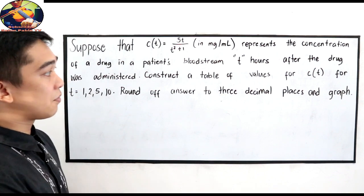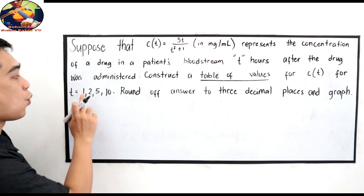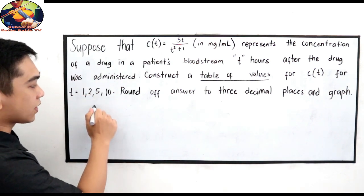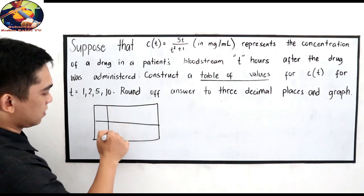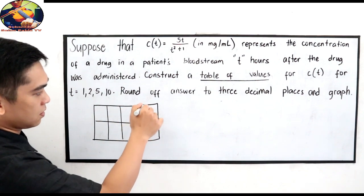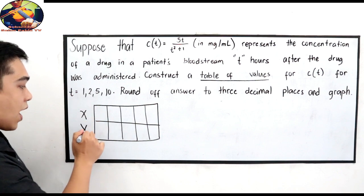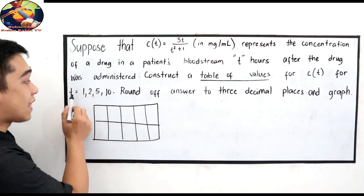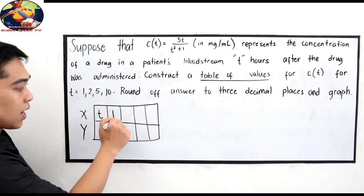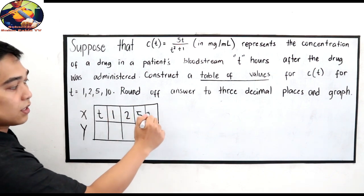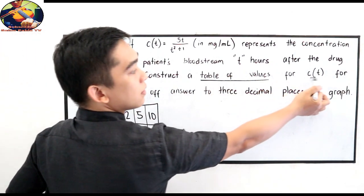So, we'll create a table of values using our time values 1, 2, 5, 10. So let's make our table of values. There, that's our table of values. We know this is X and Y. But we have the given time, which is considered as T. That's our X. Our T values are 1, 2, 5, 10.